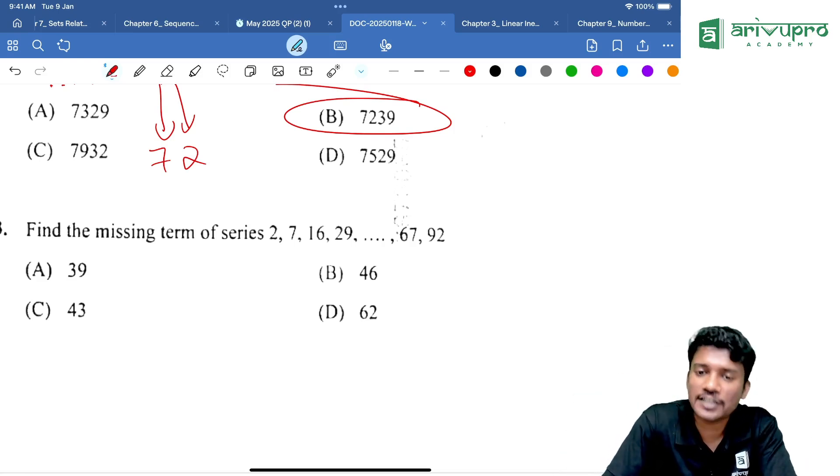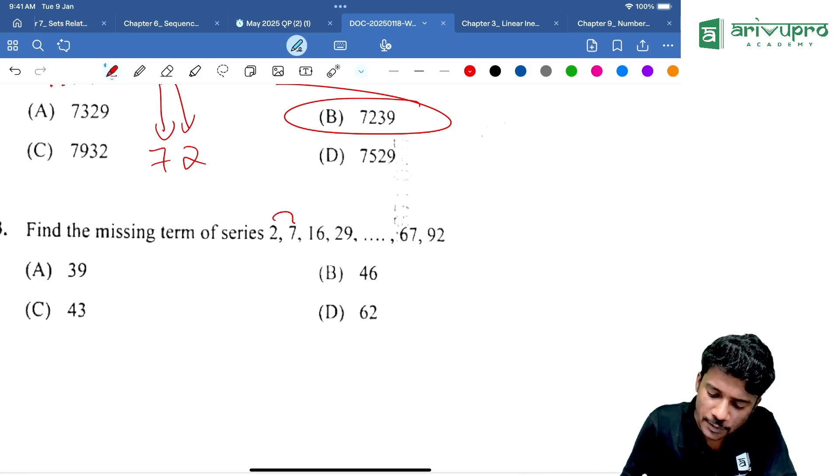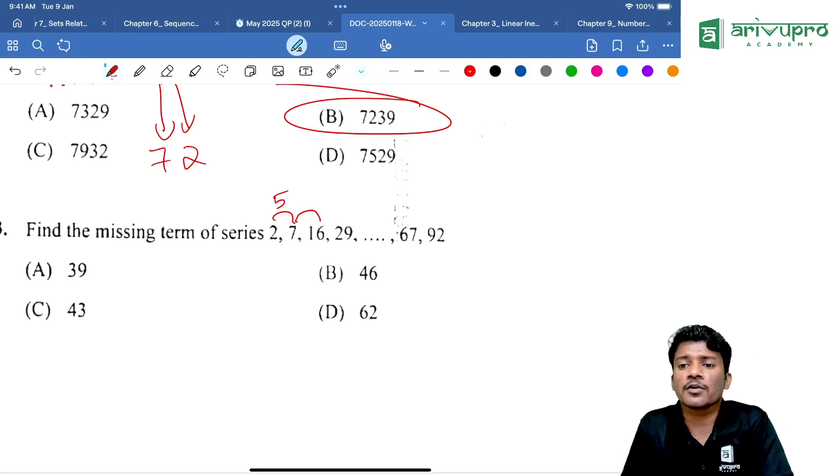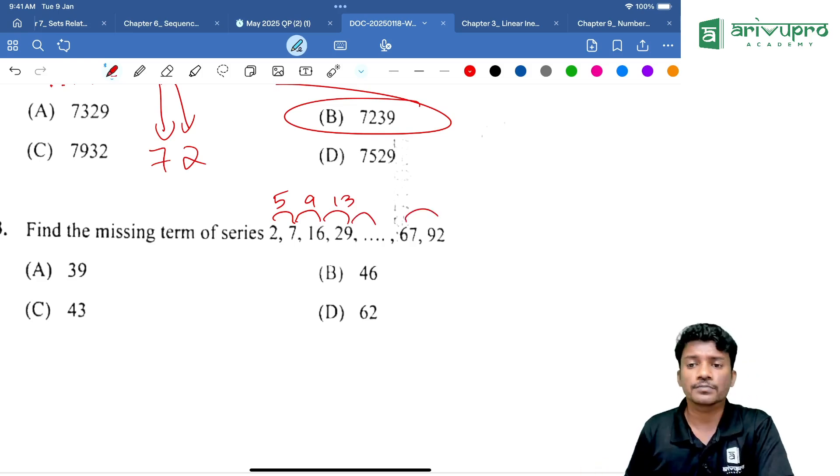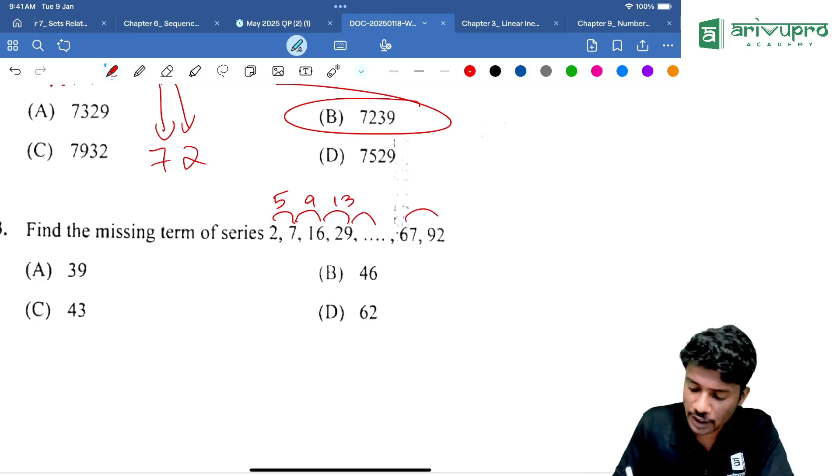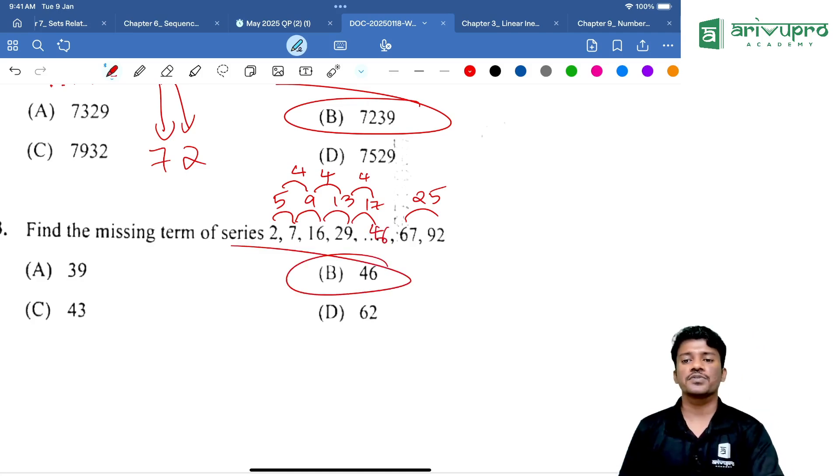2 is becoming 7, 7 is becoming 16, 16 is becoming 29, then 29 is becoming something else, then 67 and 92. 2 is becoming 7, 7 is becoming 7 plus 9, then 16 plus 13 is 29. Then 64 plus 25 is 92. What is the common difference? 4, then 4. Next number will be plus 4, that is 17. So 29 plus 17 is 46. Answer is option B.